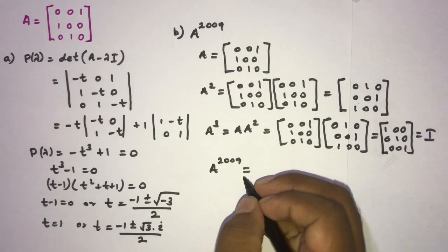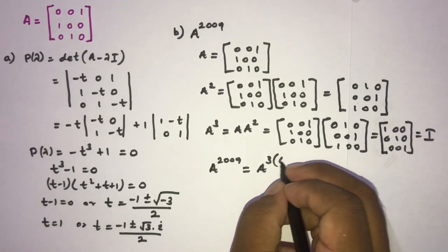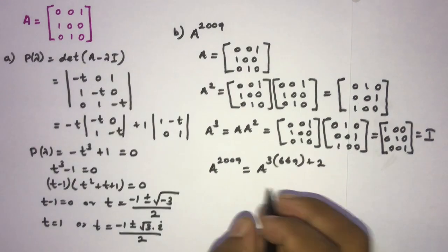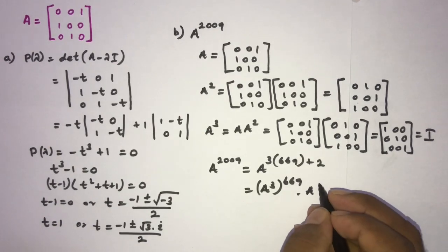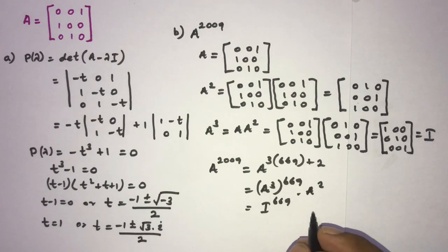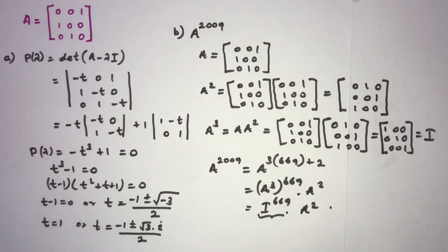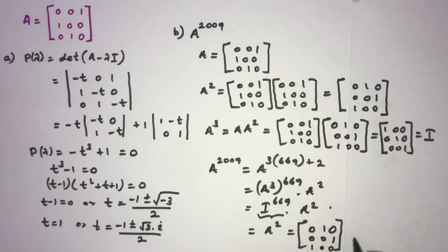To evaluate A to the 2009th power, we write 2009 = 3×669 + 2. So A^2009 = (A³)^669 · A² = I^669 · A² = I · A² = A². We already computed A squared, so the final answer is A² equals the matrix with rows [0, 1, 0], [0, 0, 1], [1, 0, 0].